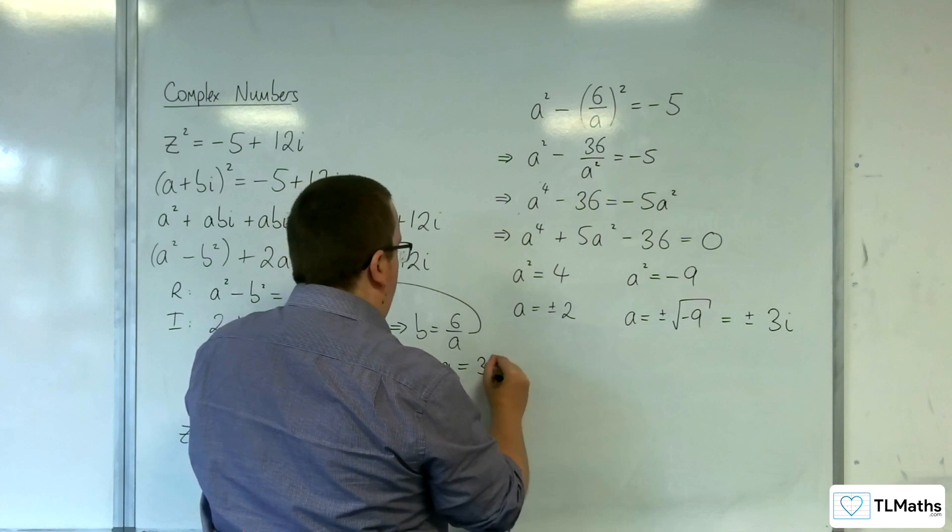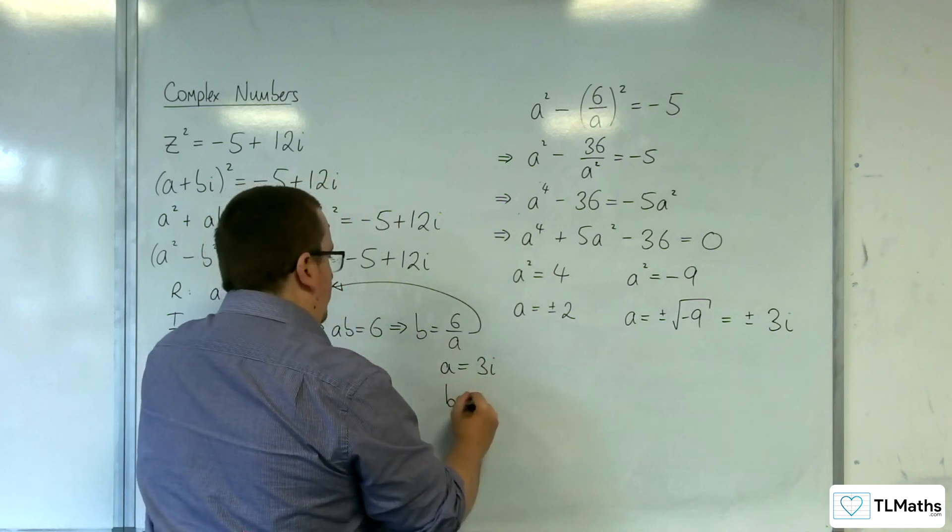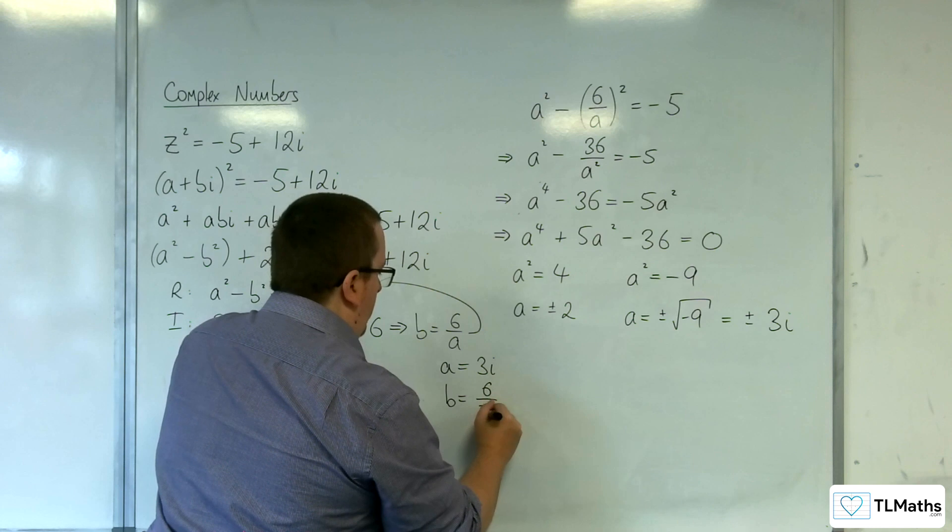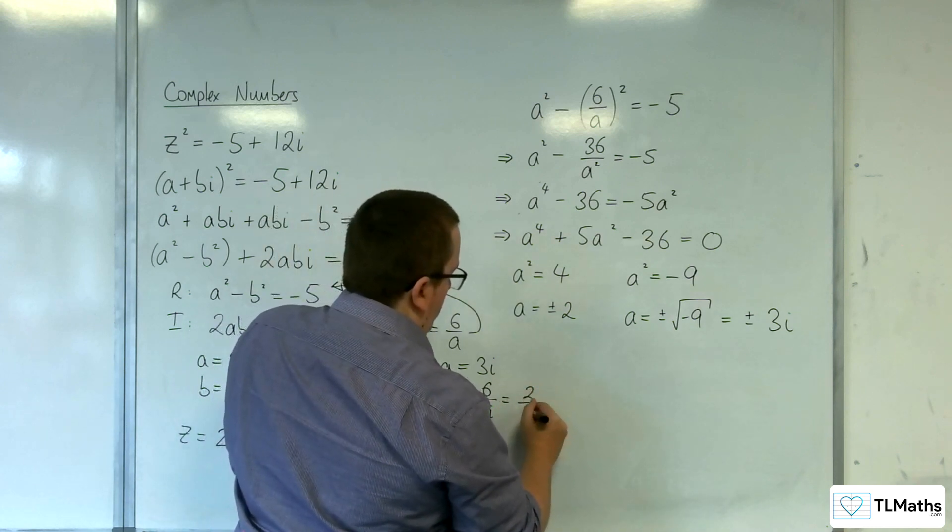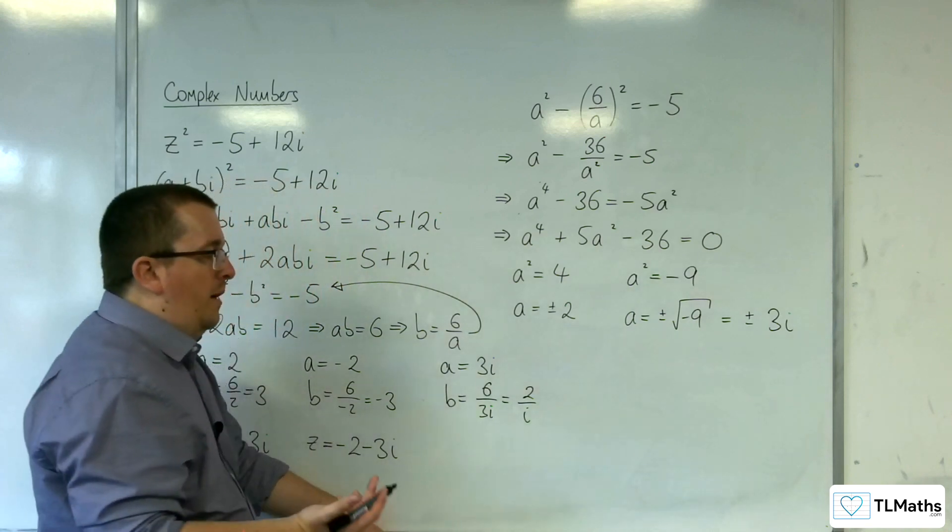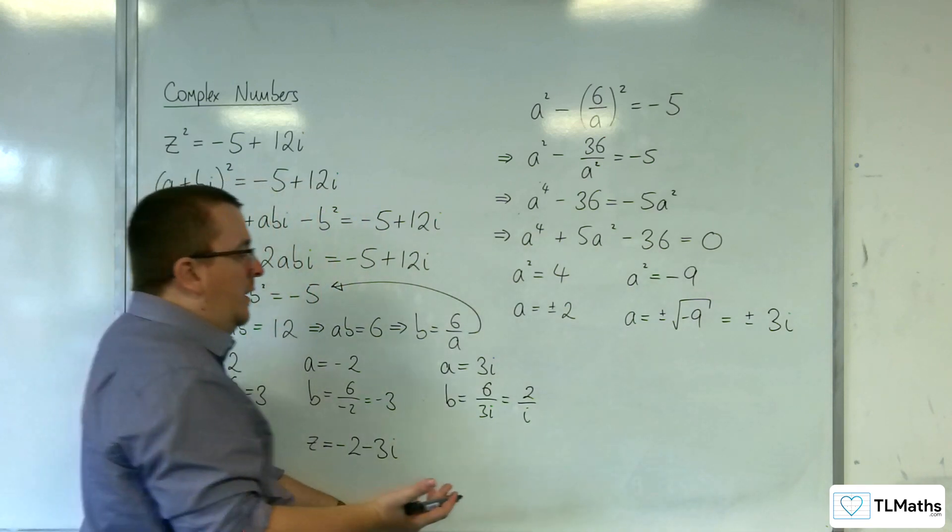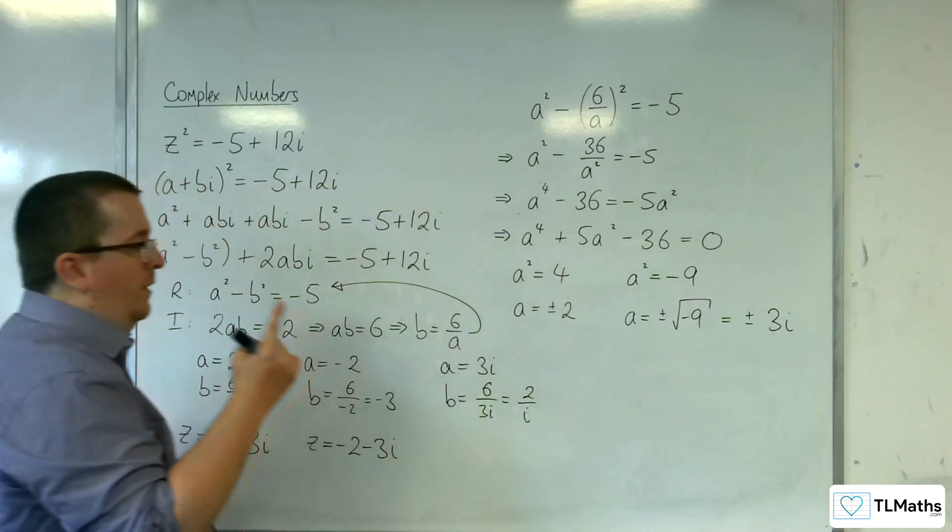So, if a was the 3i, then b would be 6 over 3i. So, 2 over i. So, multiplying that top and bottom by i. Well, actually, let's leave it alone. Let's leave it alone.